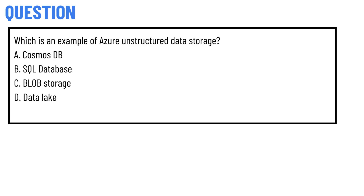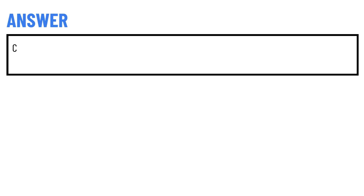Today's question is: which is an example of an Azure unstructured data storage option? Option A: Cosmos DB. Option B: SQL Database. Option C: Blob Storage. Option D: Data Lake. The correct answer is option C, Blob Storage.